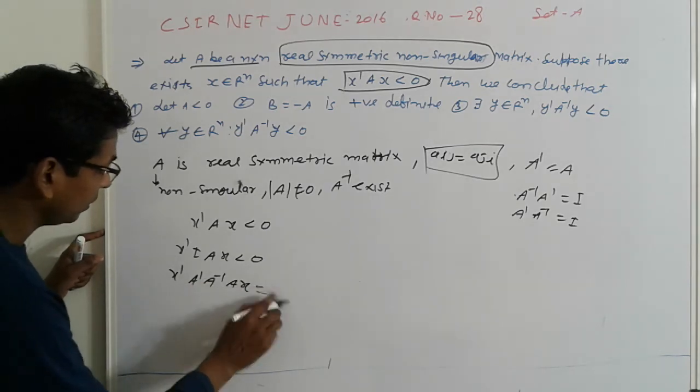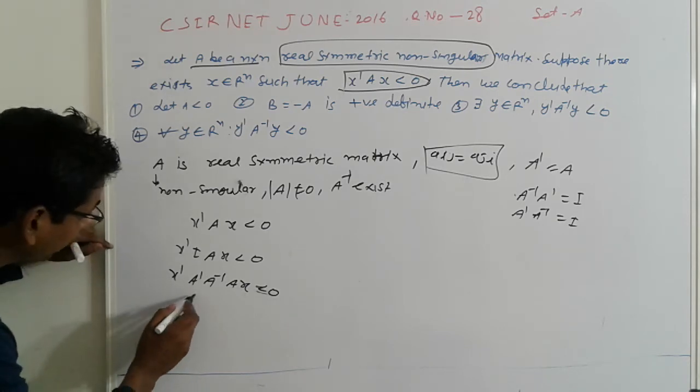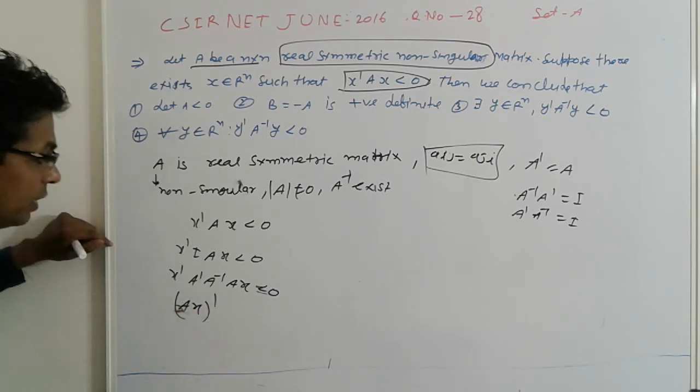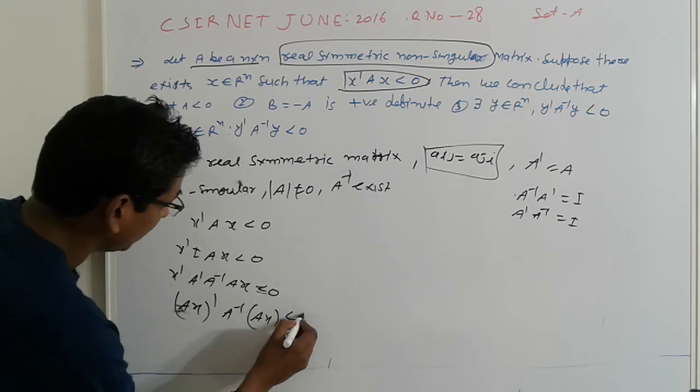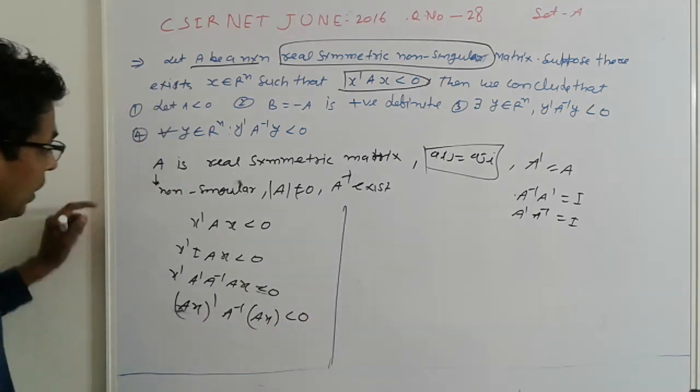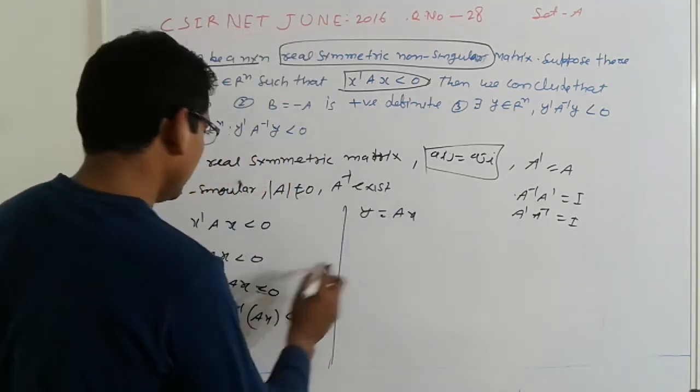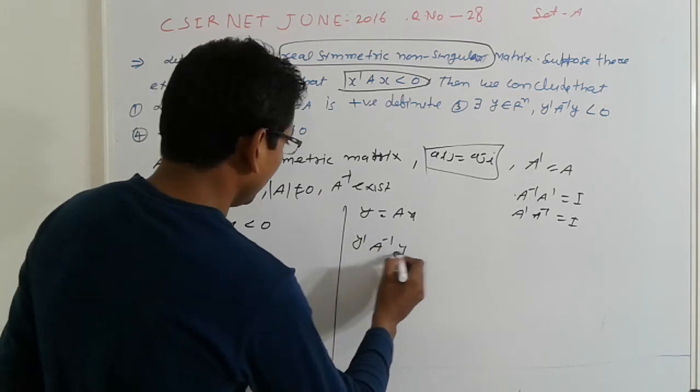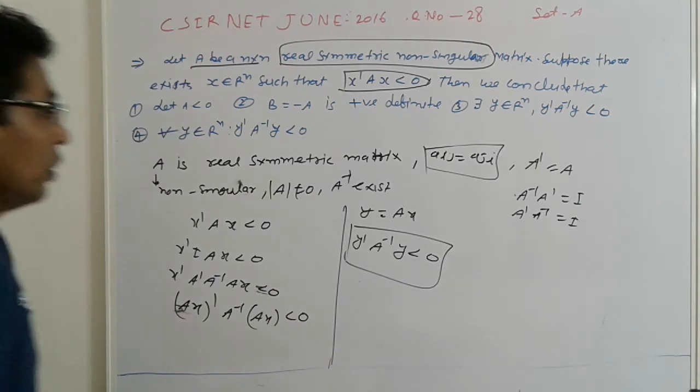That is here property use this, and which is the A x dash A inverse A x less than 0. And A x is equal to 1 here, y is equal to A x. So now this is y dash A inverse y less than 0. So that is here for all y belongs to R to the n.